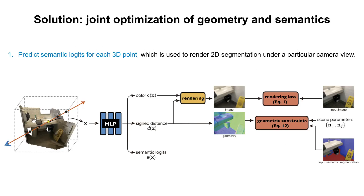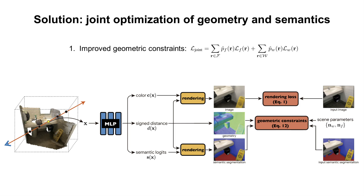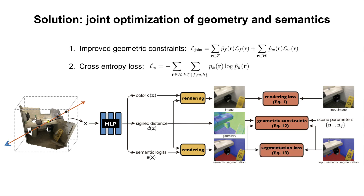To solve this problem, we augment the neural scene representation by additionally predicting semantic logits for each point in 3D space, which is used to render 2D segmentation under a particular camera view. We then improve the geometric constraints to a joint optimization loss, to optimize semantics together with geometry. The joint optimization strategy can correct some pixels which are misclassified to planar regions by reducing their corresponding probabilities. Note that a trivial solution is that both the probabilities of being floors and walls vanish. To avoid this, we also supervise the semantics using the cross-entropy loss.